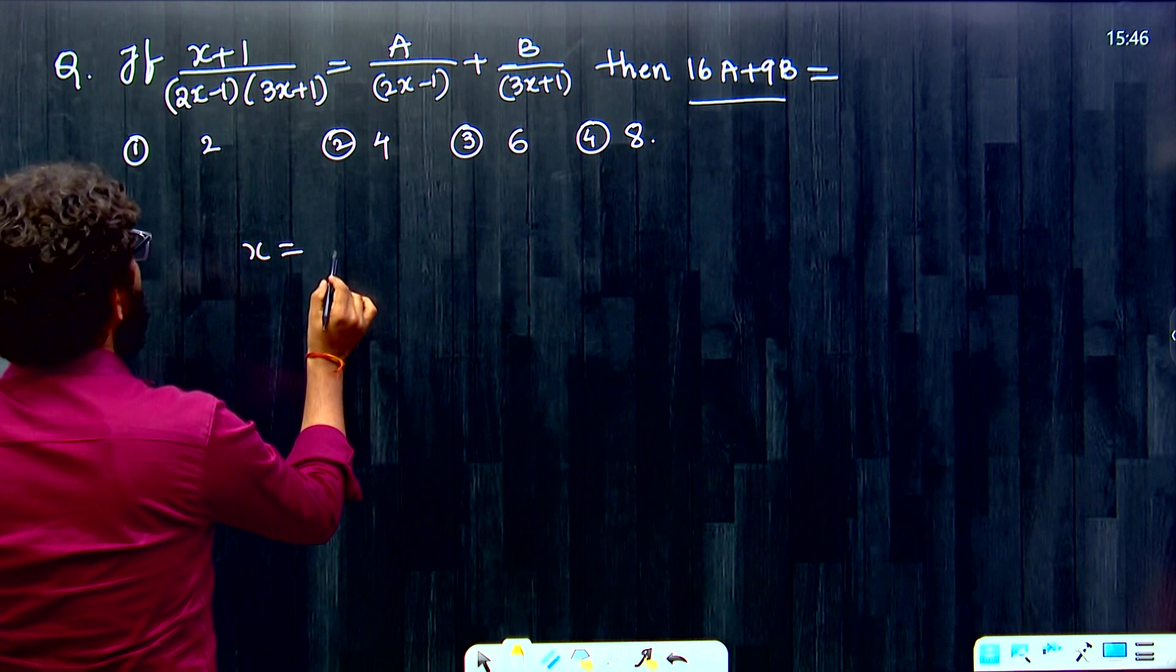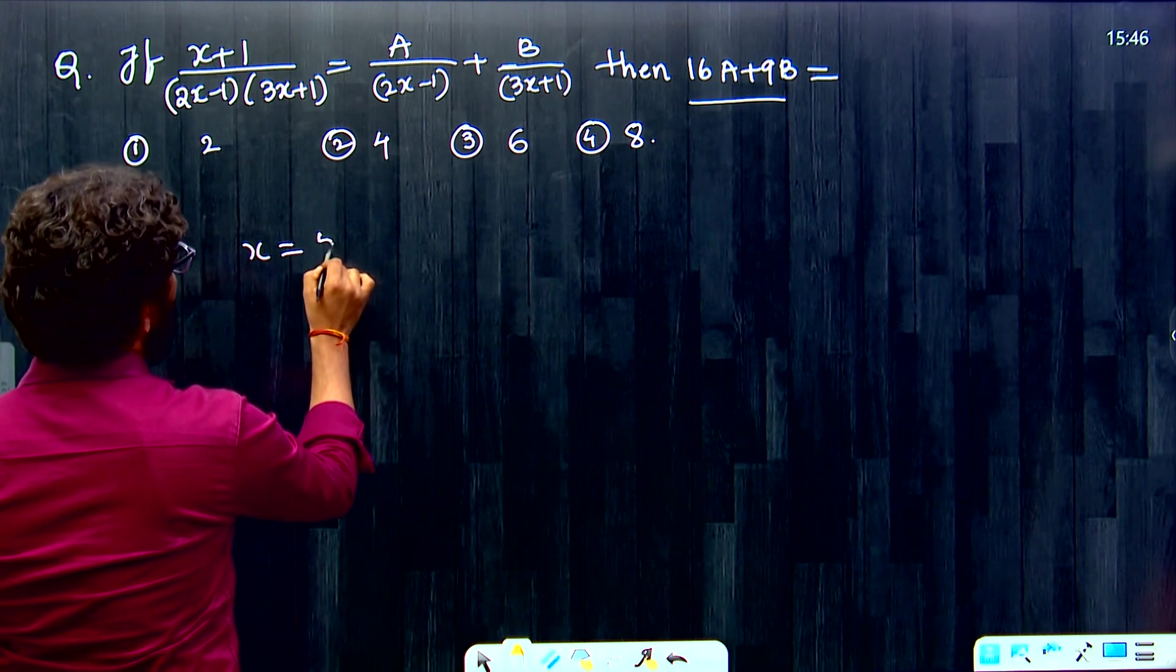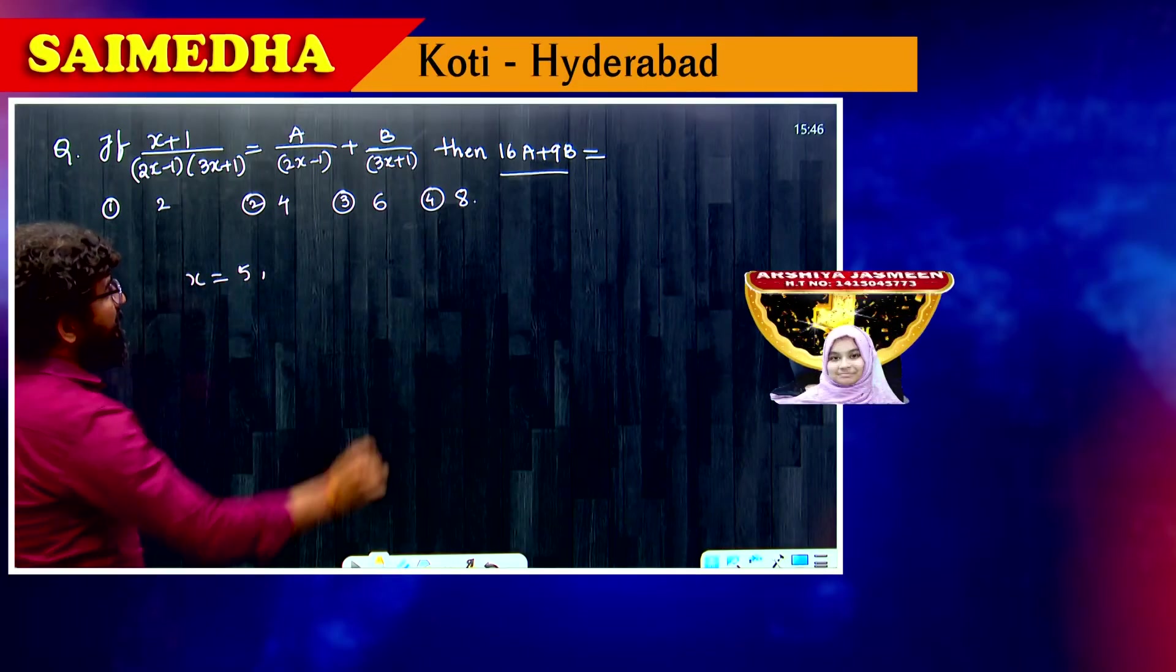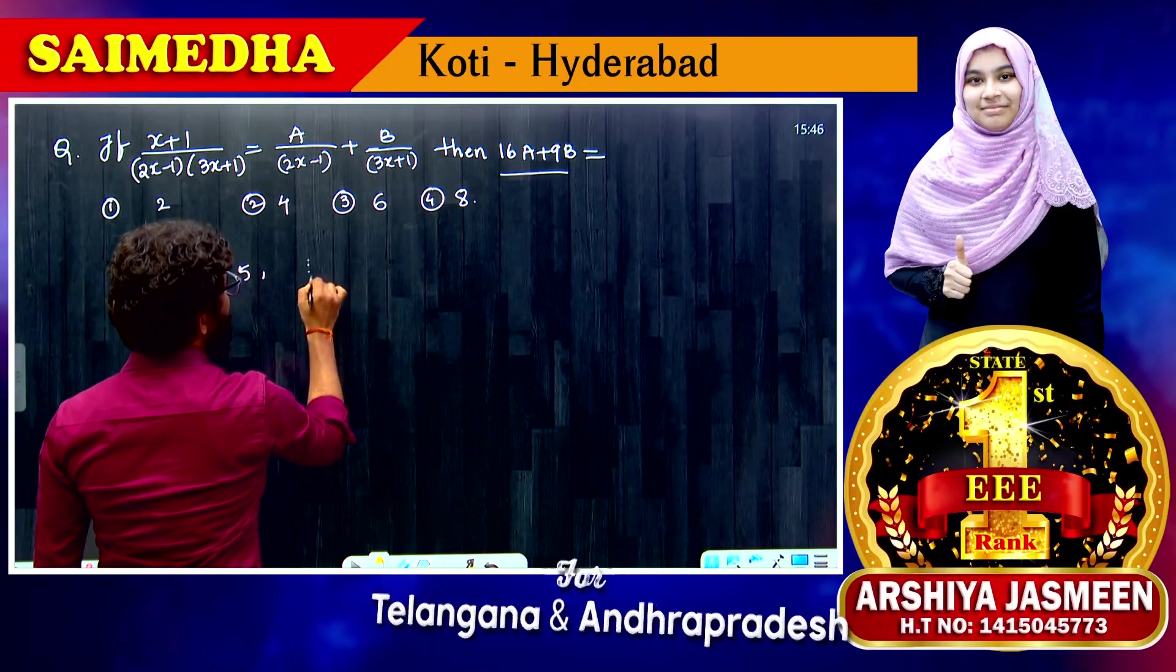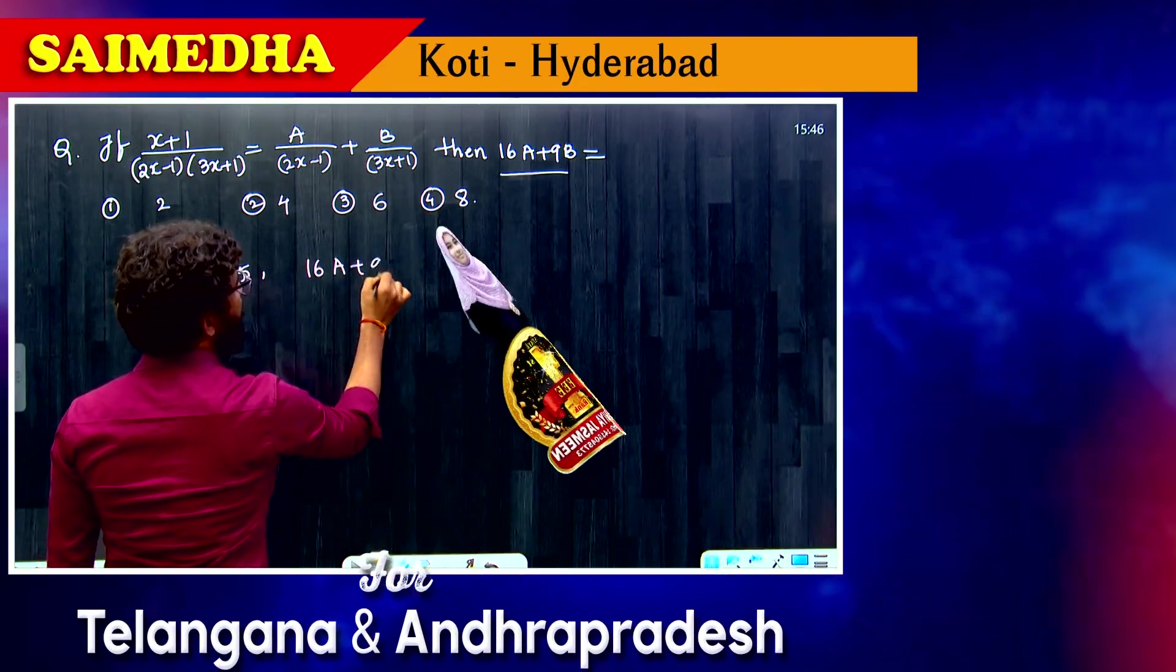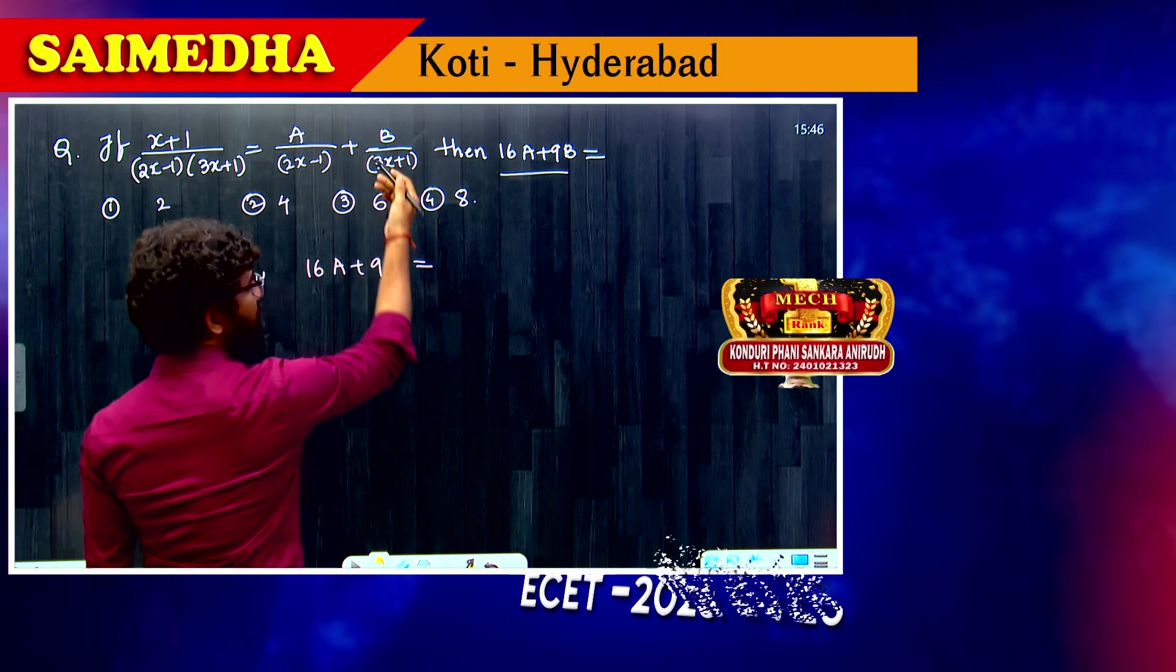Then we are going to get an answer here directly. The value is very simple, that is 5. X is equal to 5. Substitute here: 5 times 3 is 15, 15 plus 1 is 16.